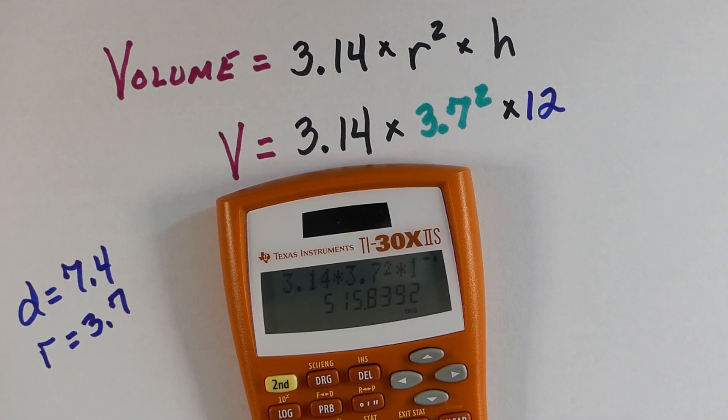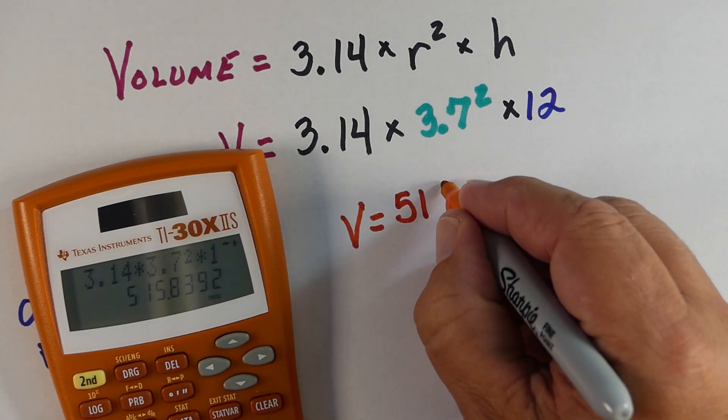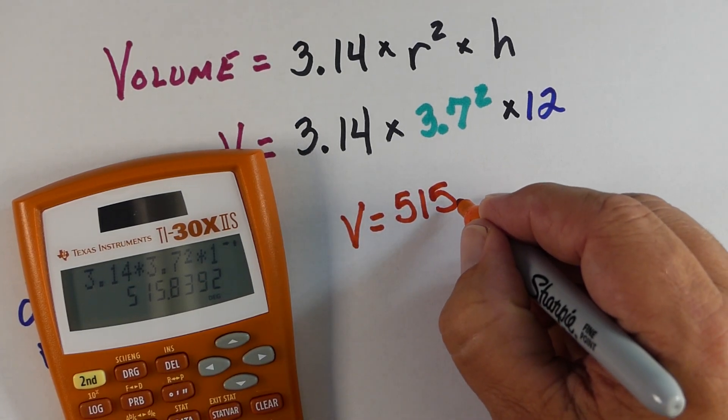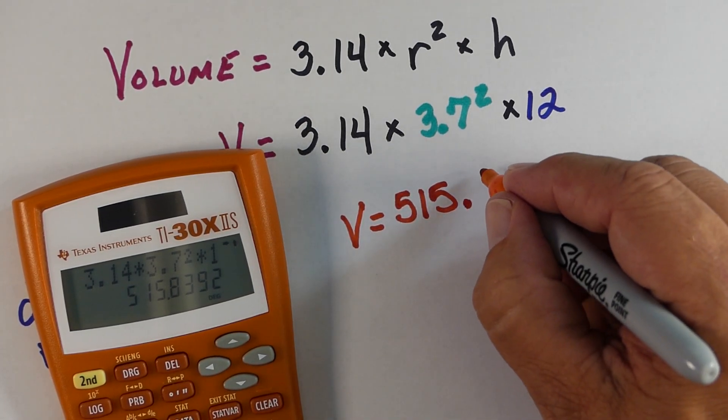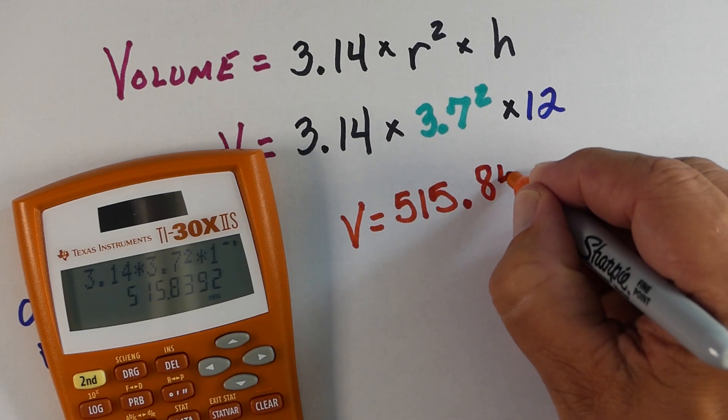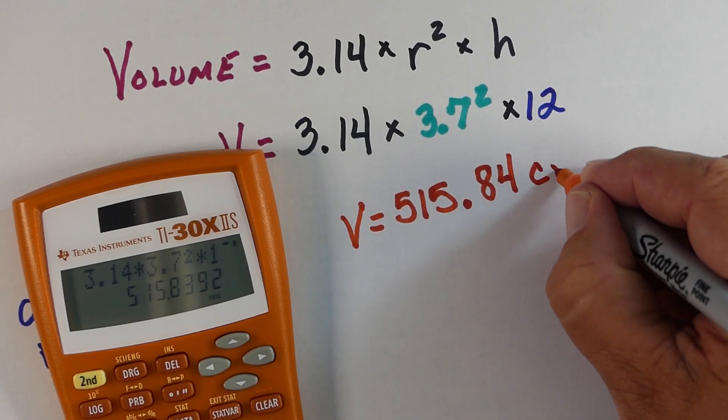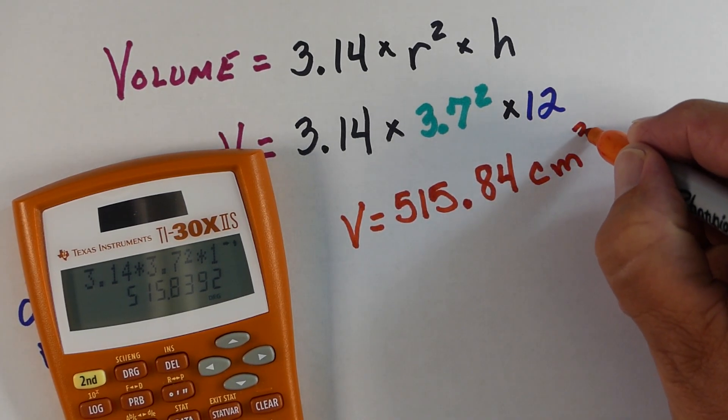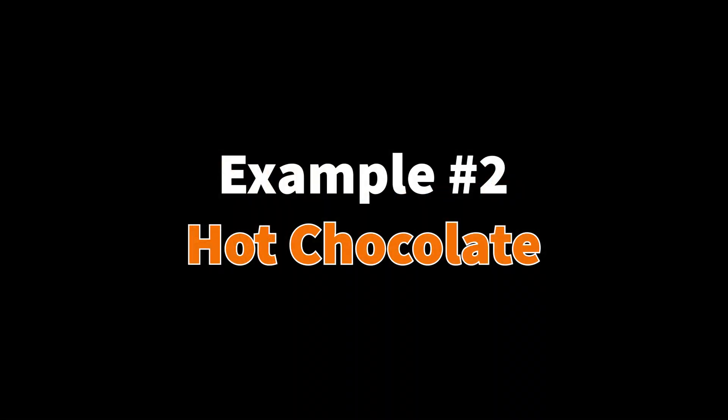And when we do that, we come up with 515.8392, or 515.8392 cubic centimeters. Now, you can round this off, depending on what your teacher wants you to do, or however you would like to do it. So, we could round it off as 515.84.